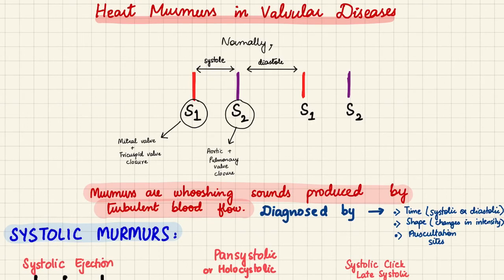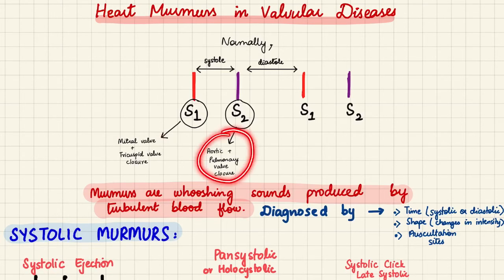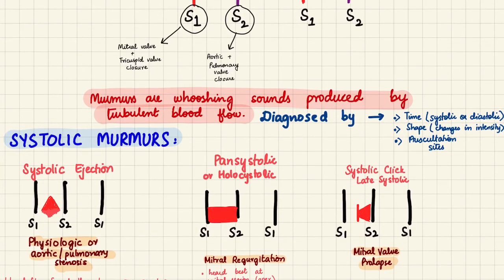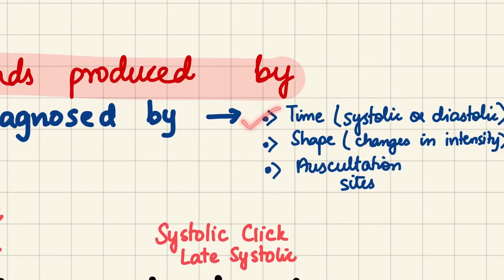Now we'll discuss heart murmurs in these valvular dysfunctions. S1 occurs when the mitral and tricuspid valves close, while S2 occurs when the aortic and pulmonary valves close. Systole occurs between S1 and S2, and diastole between S2 and the next S1. Murmurs are whooshing sounds produced by turbulent blood flow through a diseased valve, characterized by timing (systolic or diastolic), shape or changes in intensity, and best auscultation sites.